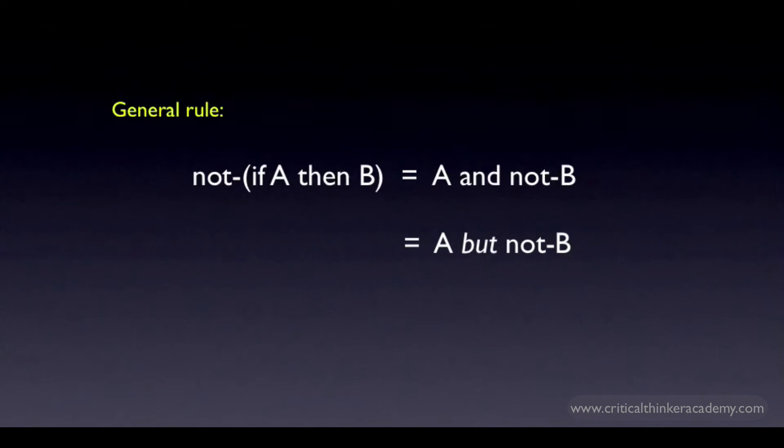The most common mistake that students make when solving problems that require taking the contradictory of a conditional is to interpret the contradictory as a conditional of this form: if A then not-B. This is a tempting interpretation of the contradictory but it just doesn't work. There are a couple of ways of seeing why this is so. One way uses truth tables.